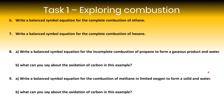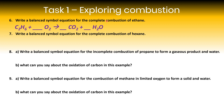A balanced equation for the complete combustion of ethane: ethane is C₂H₆, reacting with oxygen to form CO₂ and H₂O. Two carbons gives two CO₂; six hydrogens gives three H₂O; balancing oxygen requires 3.5 O₂. A half number is fine.